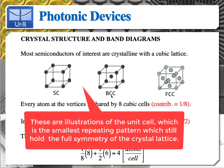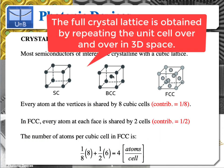You have the body-centered cubic, where besides the vertex atoms, you have one atom right at the center of the unit cell. You also have the face-centered cubic, where you have the atoms at the vertices as well as six atoms right at the faces of the unit cell.